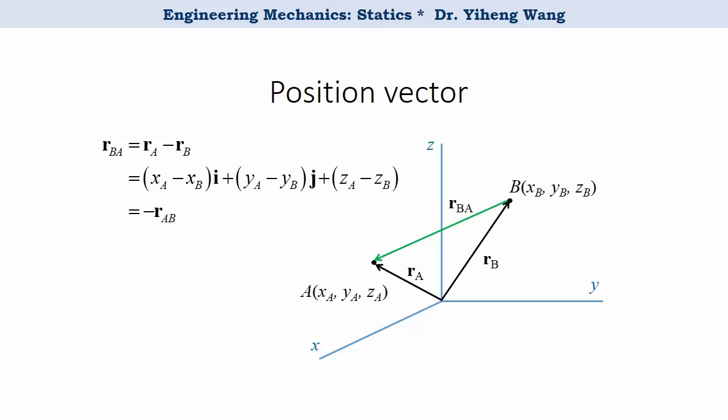On the other hand, the relative position of point A relative to point B is expressed by the opposite vector r that starts from point B and ends on point A, and r equals to ra minus rb and it also equals to negative rab.